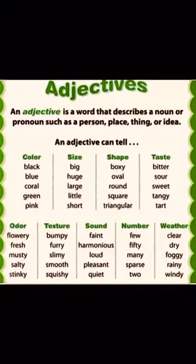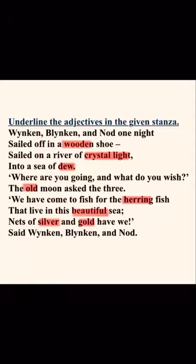In the first page, you need to underline the adjectives in the given stanza. The stanza reads: Winken, Blinken, and Nod one night sailed off in the wooden shoe, sailed on a river of crystal light into a sea of dew. Where are you going and what do you wish? The old moon asked the three. We have come to fish for the herring fish that live in this beautiful sea. Nets of silver and gold have we, said Winken, Blinken, and Nod. You need to find the adjectives in this stanza.